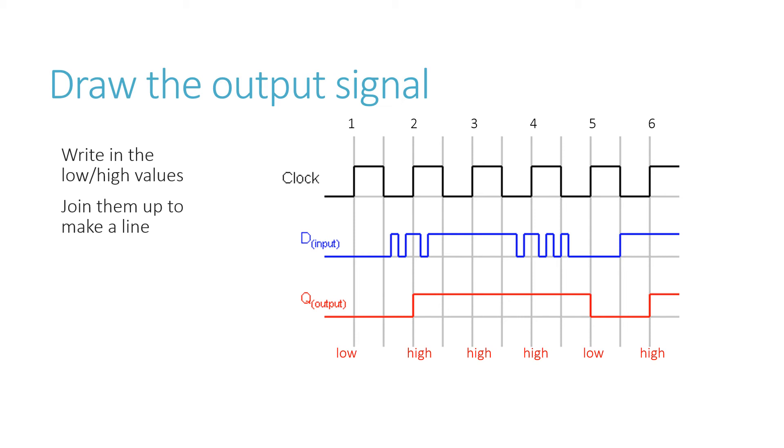So you can see that the output is a much simpler and smoother signal than the wobbly data input. That's the blue line.